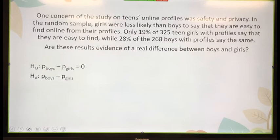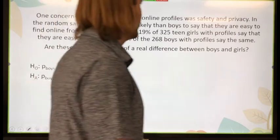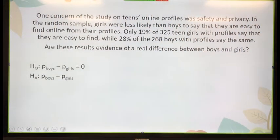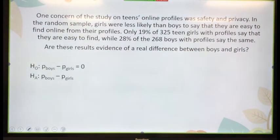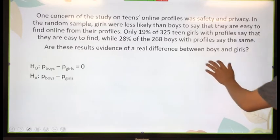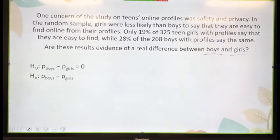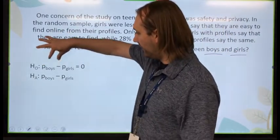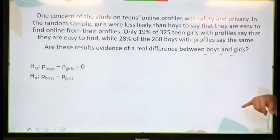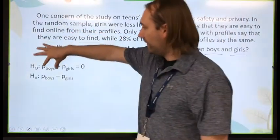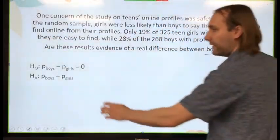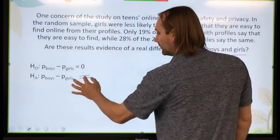Let's do one more. One concern of the study on teens' online profiles was safety and privacy. In the random sample, girls were less likely than boys to say they are easy to find online from their profiles. Only 19% of 325 teen girls with profiles say they are easy to find, while 28% of the 268 boys say the same. Are these results evidence of a real difference between boys and girls? My null hypothesis is p_boys minus p_girls equals 0 — no difference. My alternative is that it doesn't equal 0.